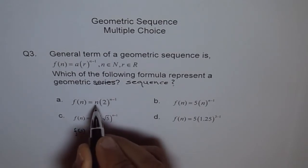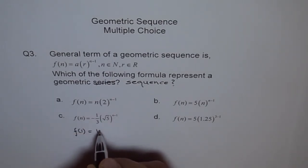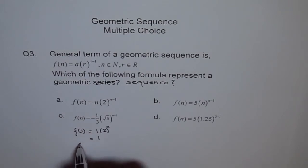f(1) will be, because n will vary, right? So it will be 1 times 2 to the power of 0, which is 1. How about f(2)? f(2) will be, n will become 2 now, 2·2 to the power of 1, which is 4.